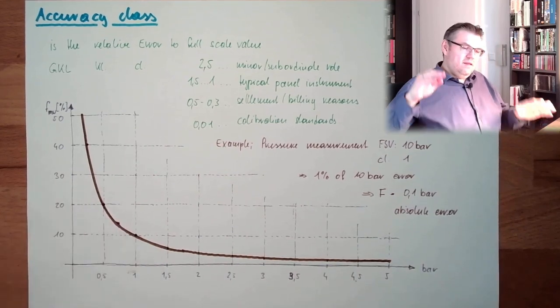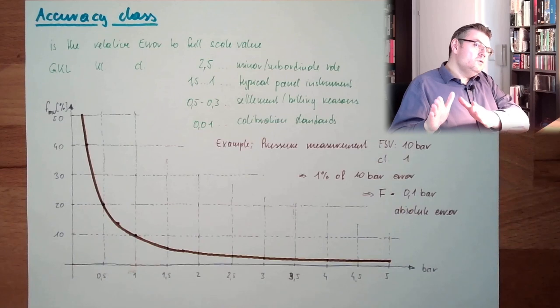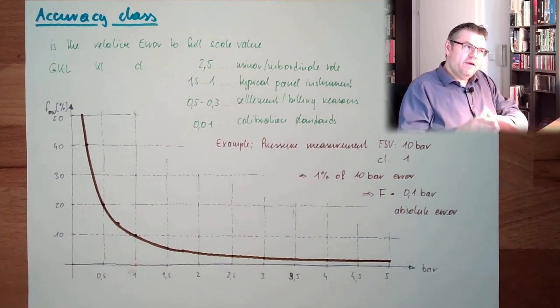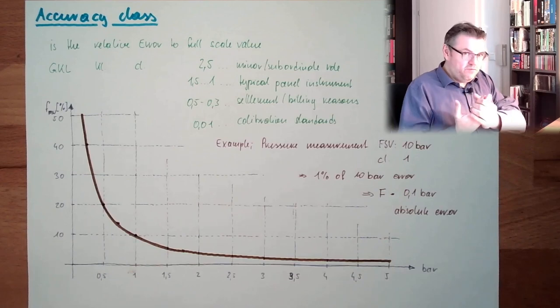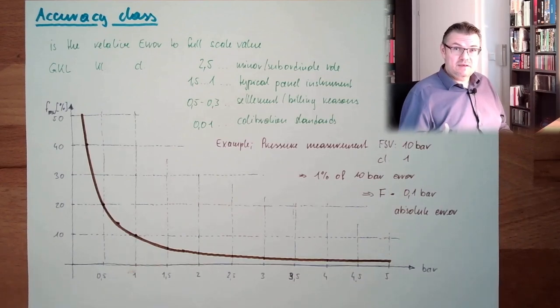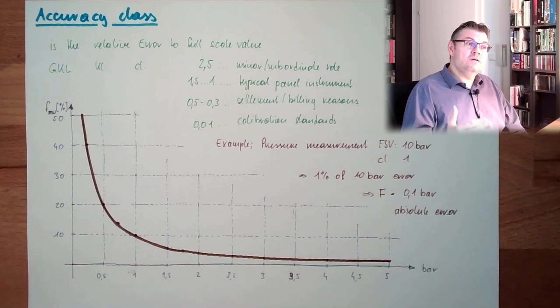So this means the measurement device and also the expected value - those two things, they have to fit together. If I'm using the wrong measurement device, this cannot even be accurate enough to deliver useful results.